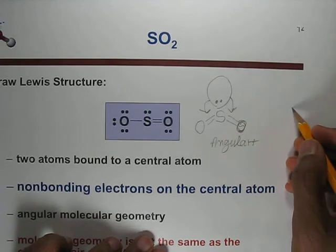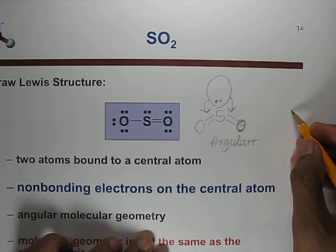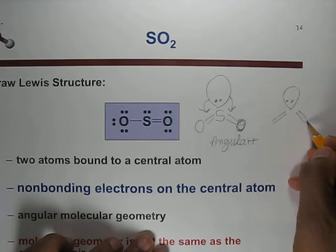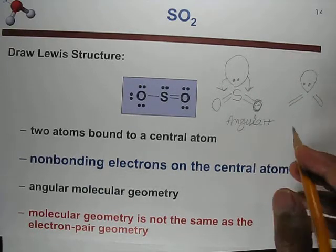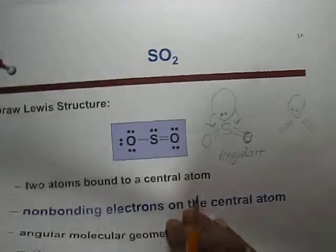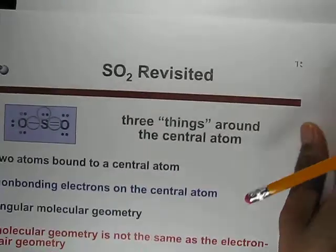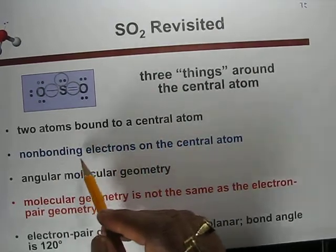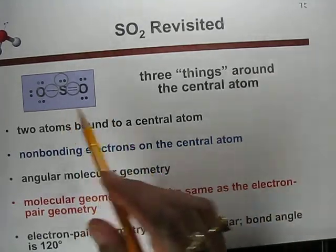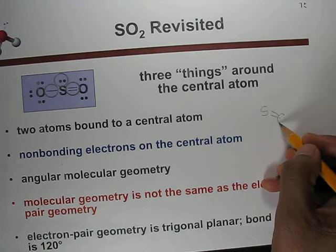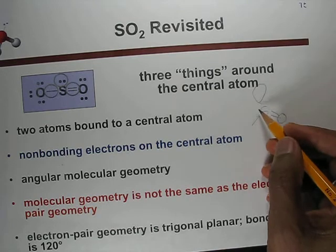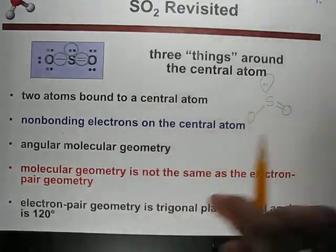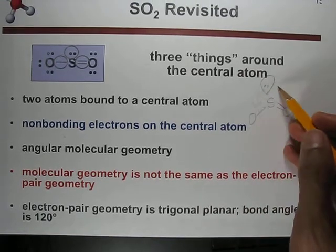If you remove all the atoms and consider only the electron pairs around sulfur in SO2, you still have three electron domains — making the electron pair geometry trigonal planar. However, the molecular shape is different — it is angular or bent. So the electron pair geometry remains trigonal planar while the molecular geometry is angular, with a bond angle of approximately 120 degrees.